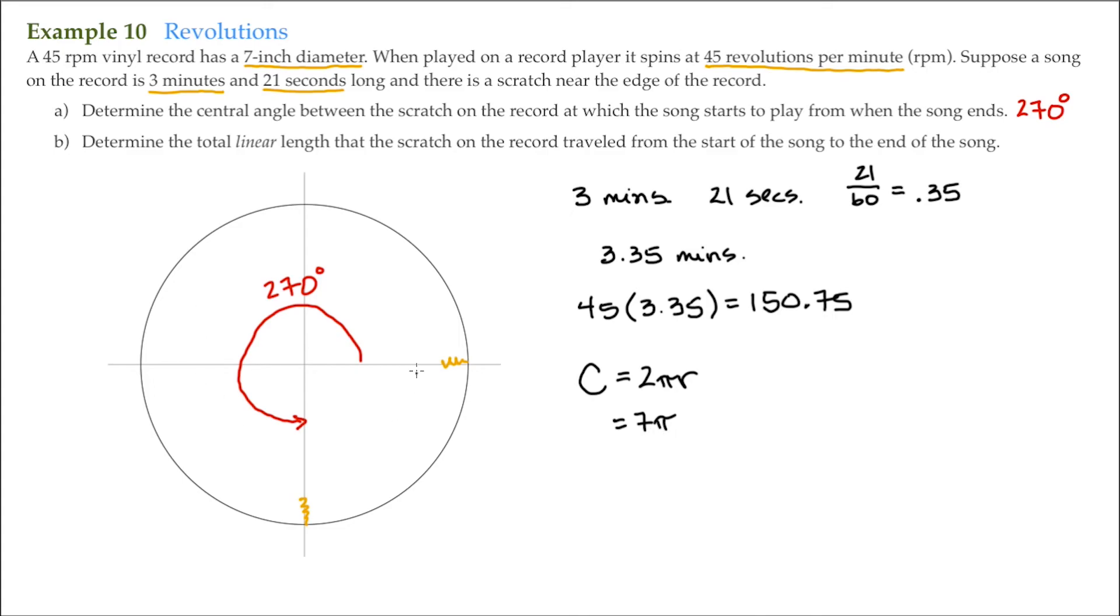If it revolves or spins for 150.75 revolutions, I'm just going to multiply that in here. 7π times 150.75, that's 1055.25π inches.